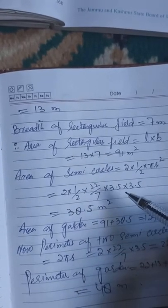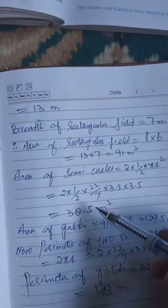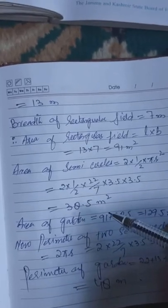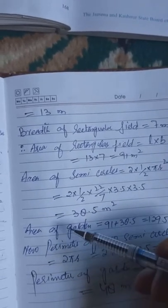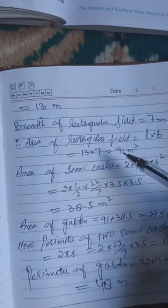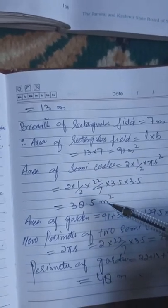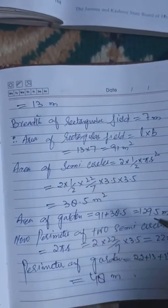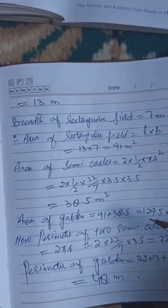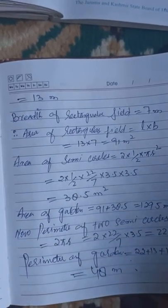The area of the two semicircles equals 22 over 7 into 3.5 into 3.5, giving 38.5 meters square. Total area equals area of rectangle plus area of semicircles: 91 plus 38.5 equals 129.5 meters square.